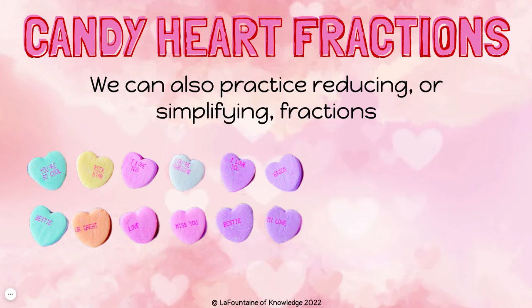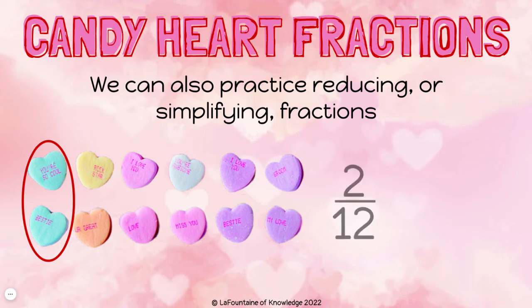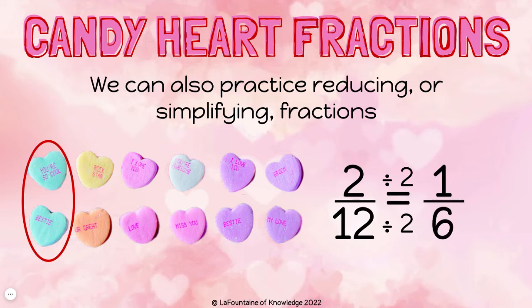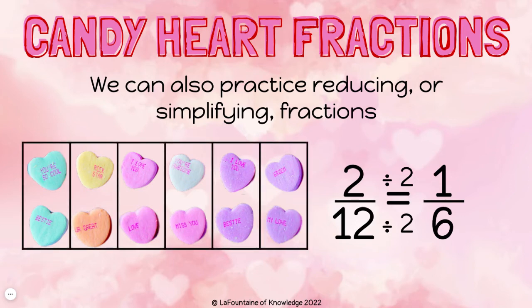We can also practice reducing or simplifying fractions using our candy hearts. Those two twelfths green that we looked at earlier can be simplified. Two and twelve can both be divided evenly by two, so two twelfths in simplest form is one sixth. If I divide up my candy hearts into six equal groups, I can see that one sixth is green.